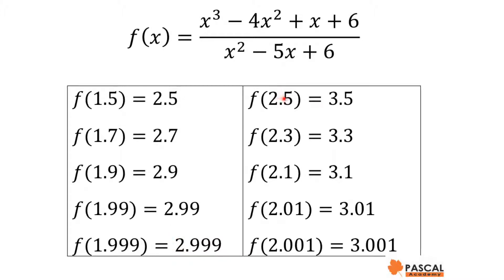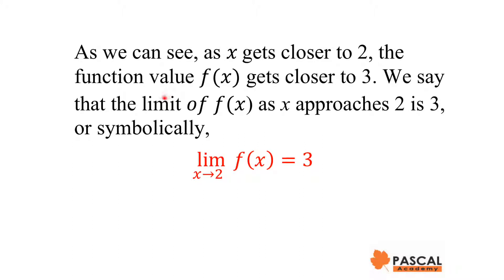Similarly, when x is getting closer to 2 and x is bigger than 2, f(x) is getting closer to 3. This means as x gets closer to 2, the function f(x) gets closer to 3. We say the limit of f(x) as x approaches 2 is 3, and this is the notation we use to show that.